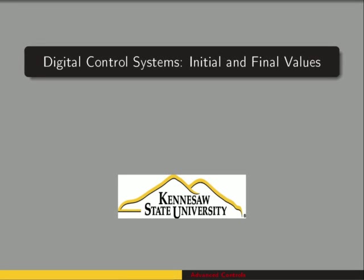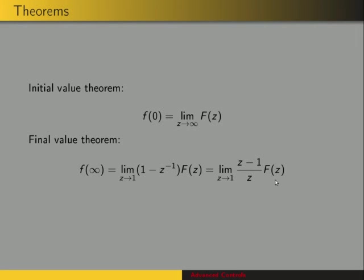This video goes over the initial and final value theorems and an application to control systems, which is the steady state error. Here are the theorems. The value of a function at time zero is given by the limit as Z approaches infinity of that function's Z-transform. The final value theorem states that the value of a function at t equals infinity is given by the limit as Z approaches one of one minus Z-inverse times the Z-transform of the function.